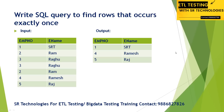The question is: write a SQL query to find rows that occur exactly once. For example, in the input data, we have employee number and ename. Number one is 'Srt', number two is 'Ram', number three is 'Ragu' — but two and three appear twice. Number one appears once, and 'Ramesh' and 'Raj' also appear once. The expected output is the rows that appear exactly once.